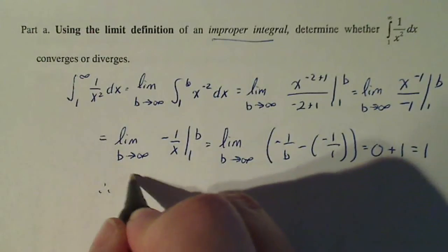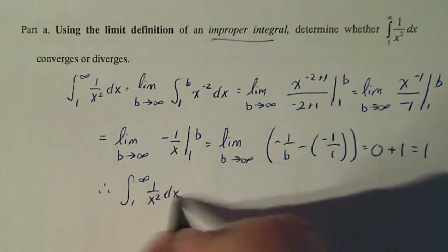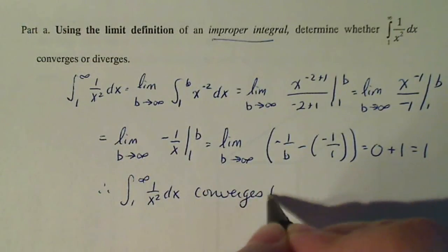Therefore, the integral from one to infinity of one over x squared dx converges to one.